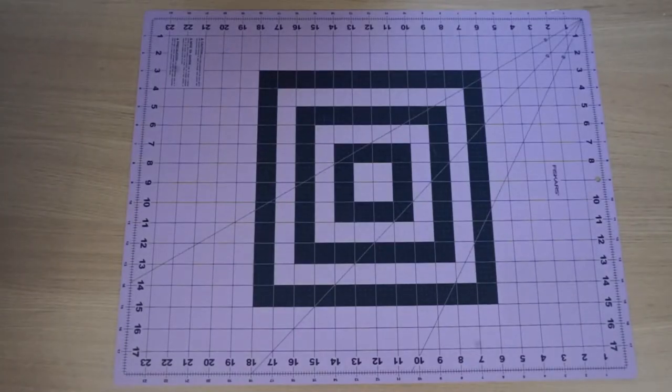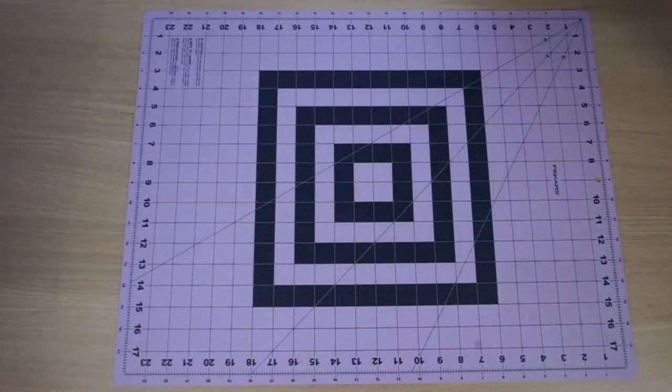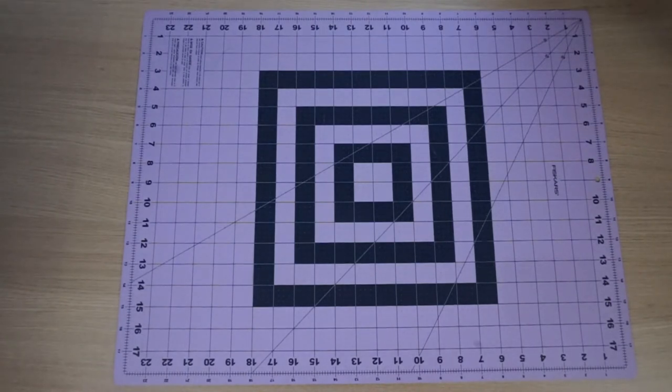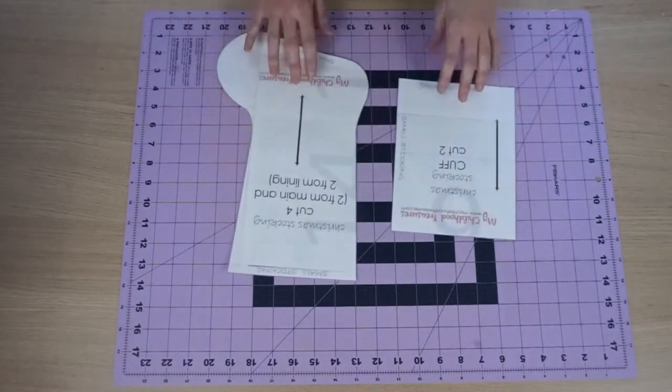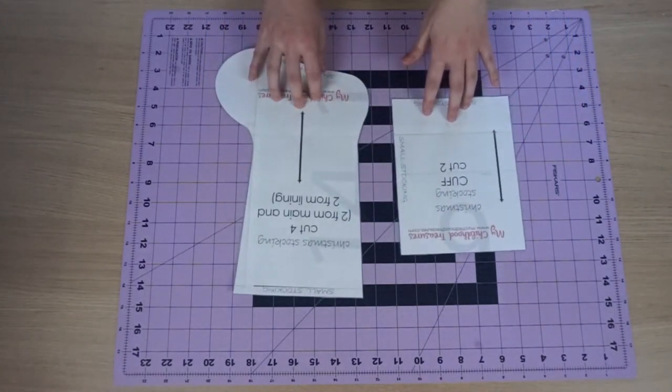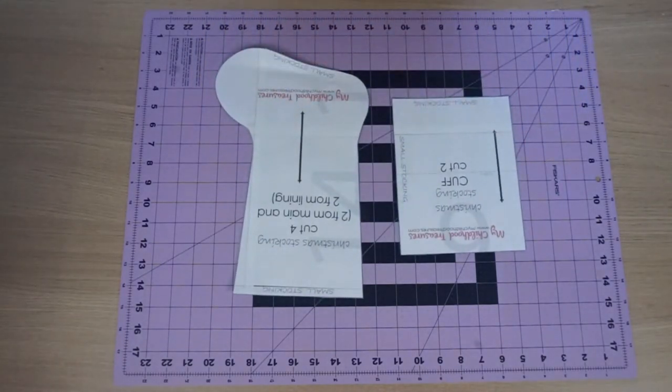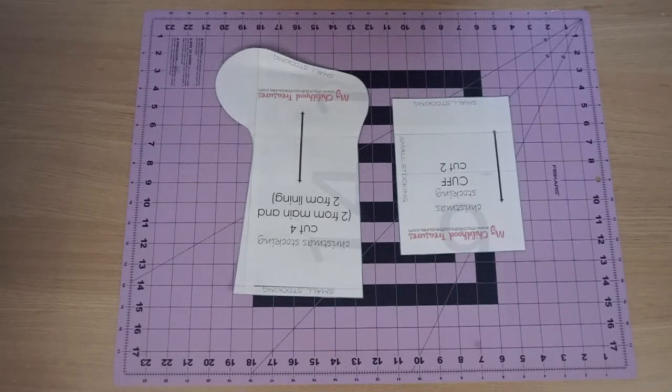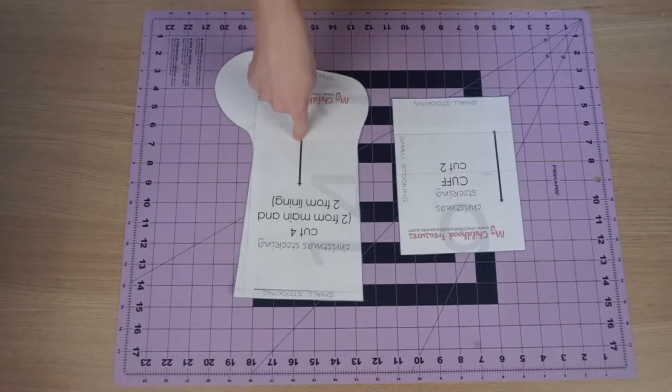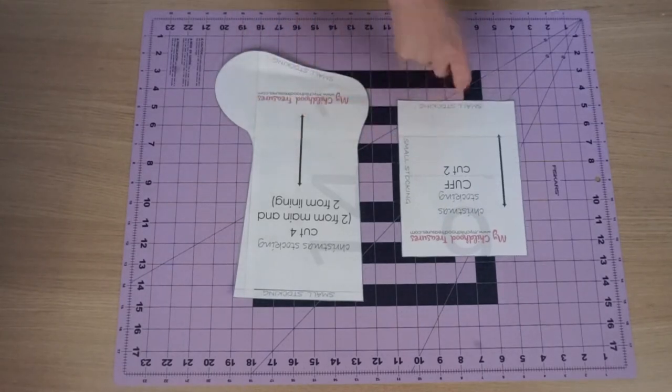So before we get started, I'm going to go over the supply list that you all need. If you hear some noise in the background, that's my dog Morton, he's chomping on his bone. So you're going to need a pattern. This is a pattern that I purchased off of a store on Etsy. I've used it for a couple of years now as my tried and true pattern. I will put that in the description box below. So what you need from here as a minimum, you'll need the stocking pattern piece and then the cuff pattern piece.